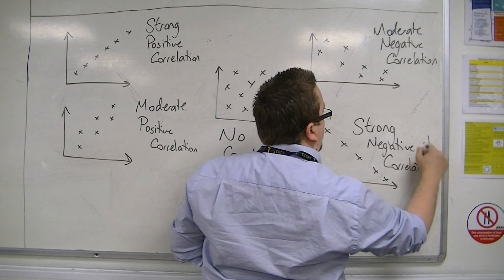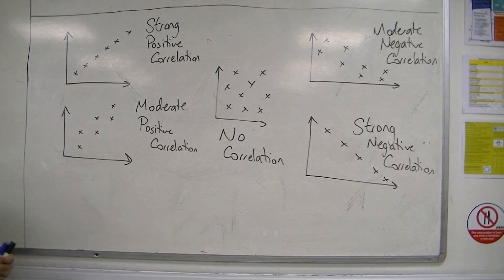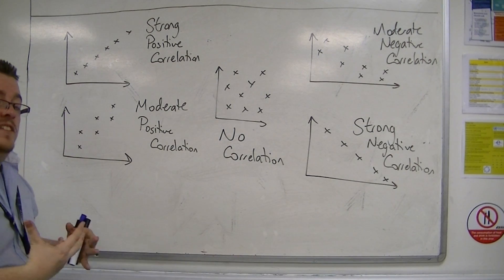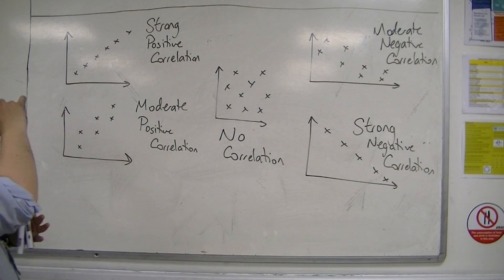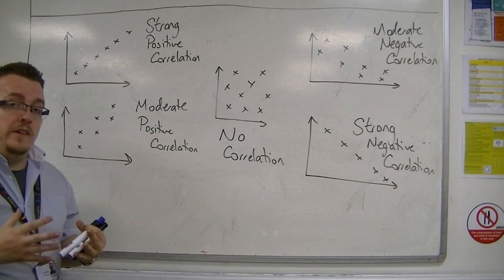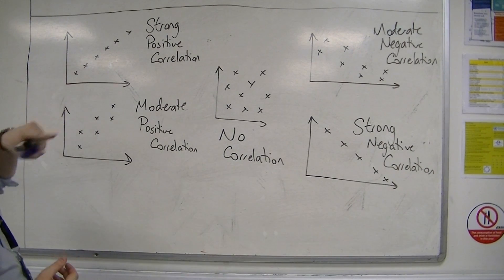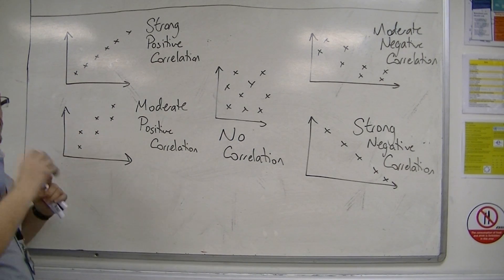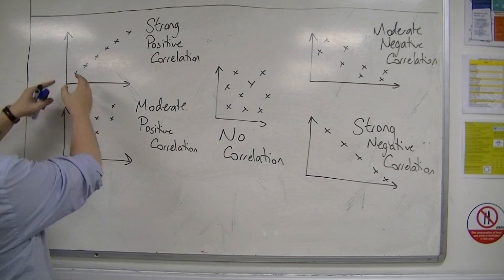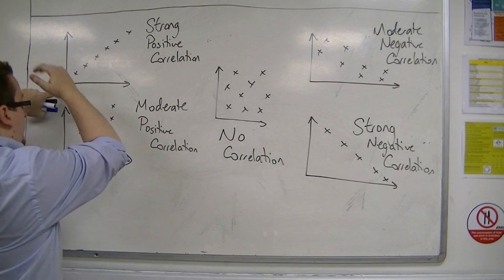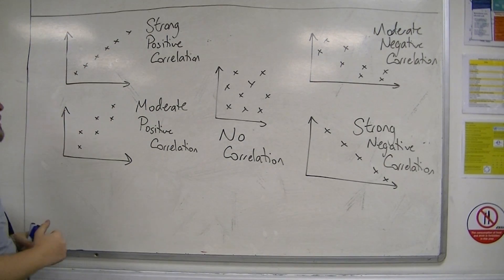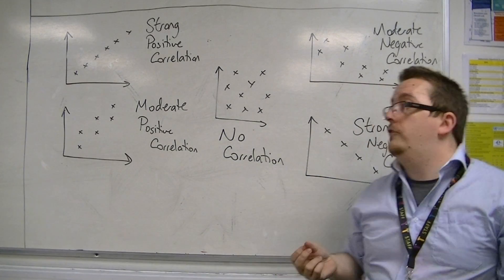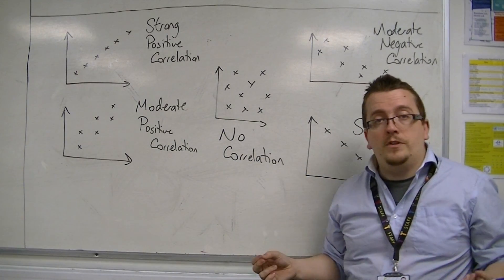Now, I talked about these being descriptors of how connected two things are. So for example, strong positive correlation where one increases, the other increases. So as I go along this axis, I am increasing along this axis. If they were completely on a straight line, then it would be like a formula for, say, Celsius and Fahrenheit, for example.